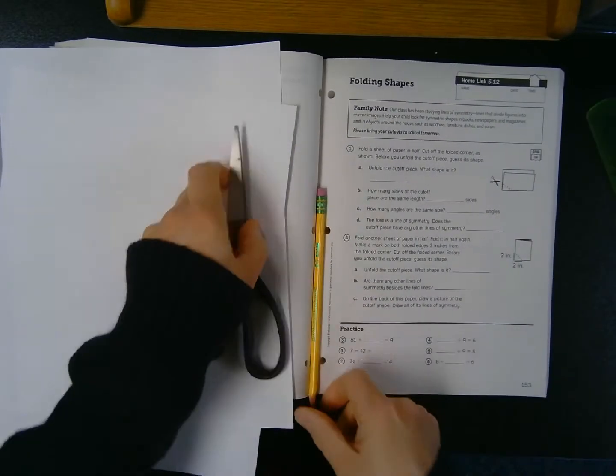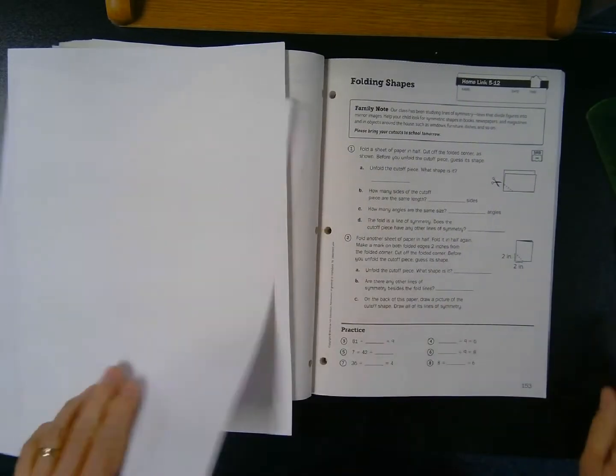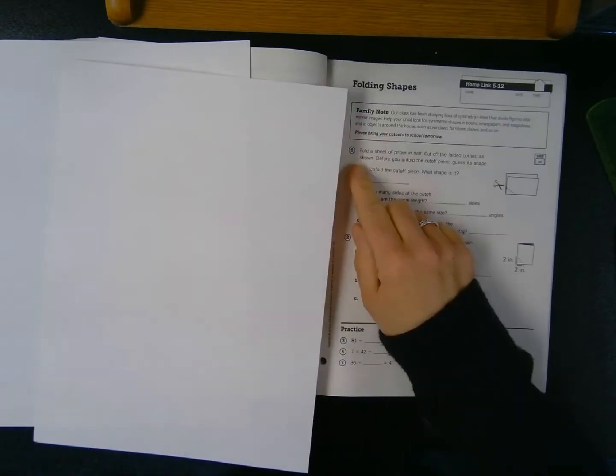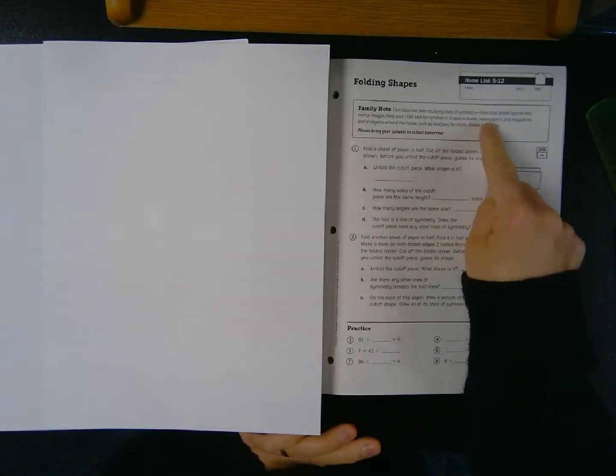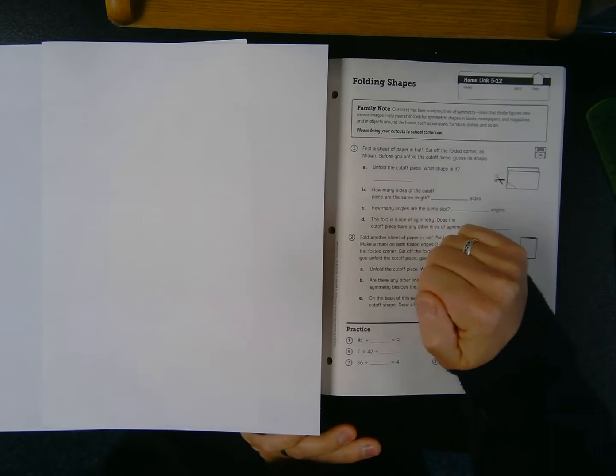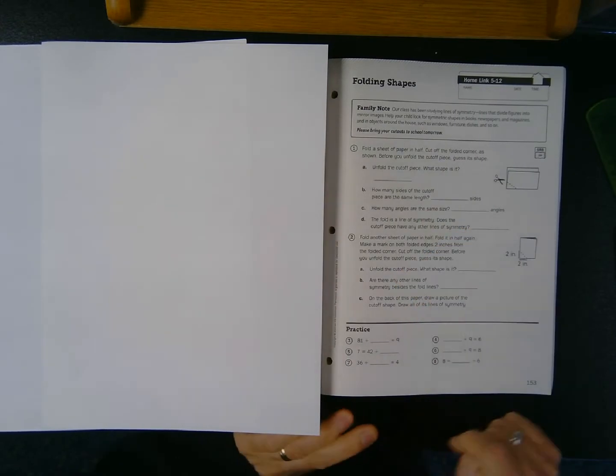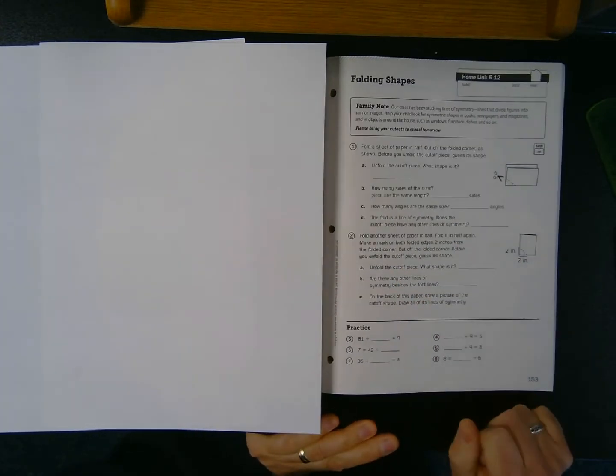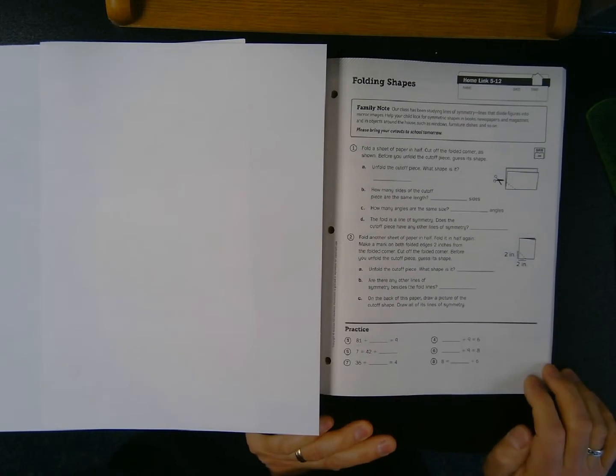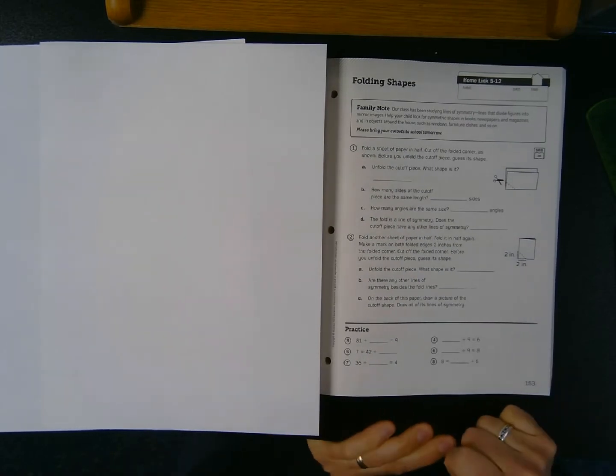So I'm going to put some of these aside for now, and I just need the paper to start with. It says, our class has been studying lines of symmetry, lines that divide figures into mirror images. Help your child look for some symmetric shapes in books, newspapers, and magazines, and in objects around the house, such as windows, furniture, dishes, and so on.